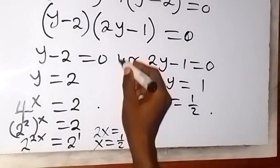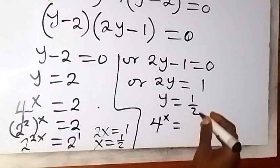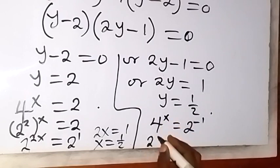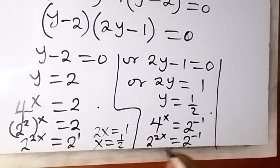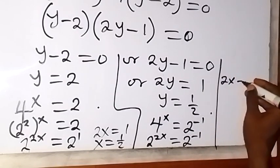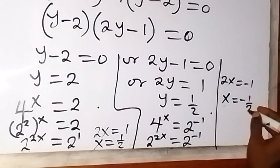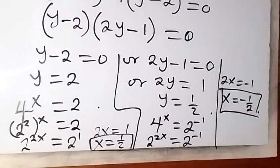For the second case, y equals 1 over 2, and since y equals 4 raised to power x, we have 4 raised to power x equals 1 over 2, which is 2 raised to power minus 1. Writing 4 as 2 squared gives 2 raised to power 2x equals 2 raised to power minus 1. Equating exponents: 2x equals minus 1, so x equals minus 1 over 2.